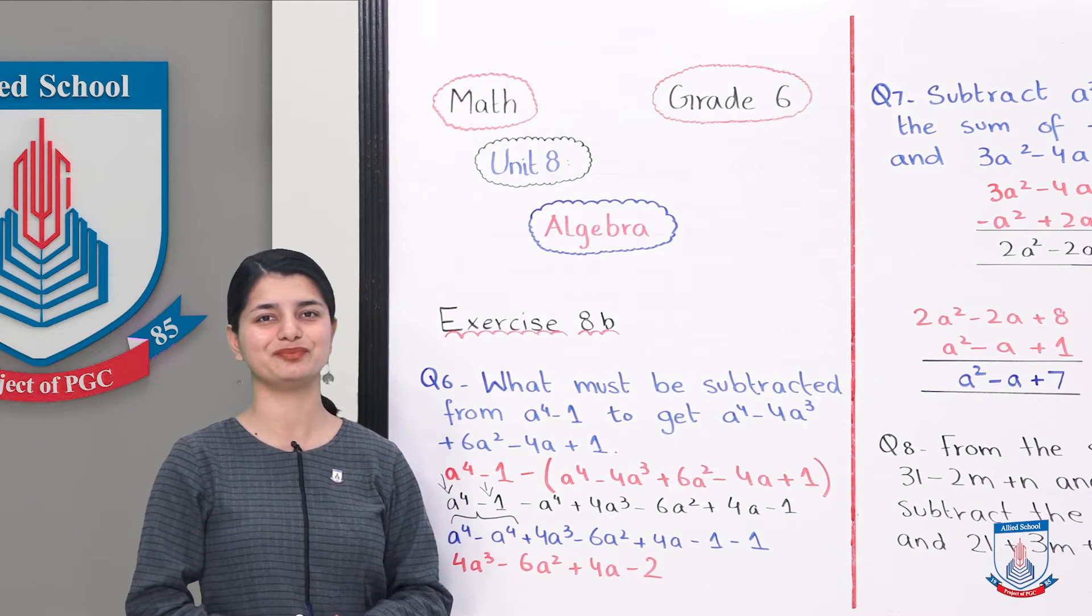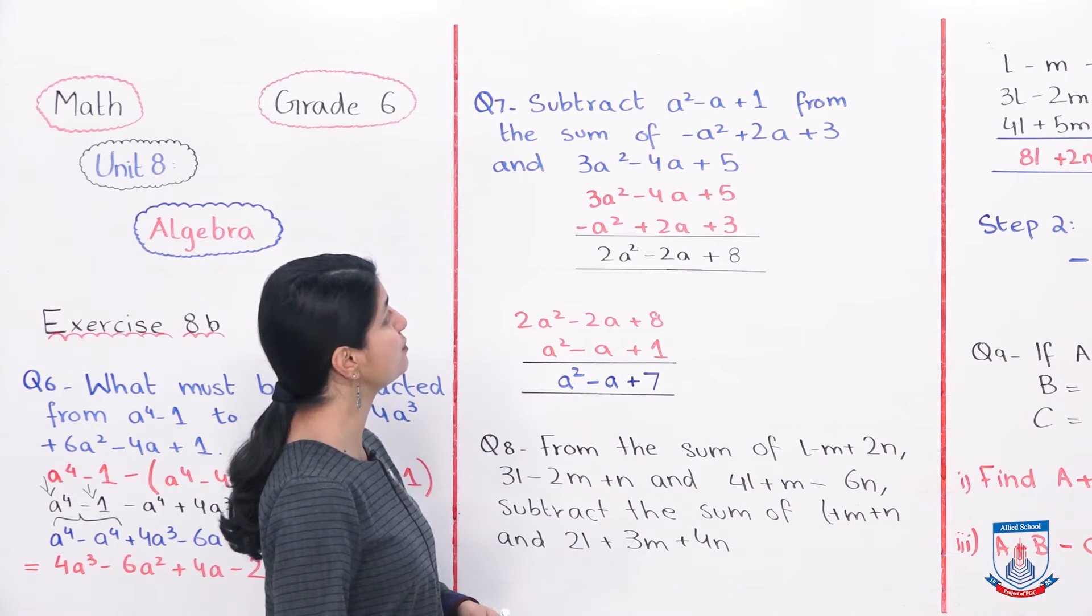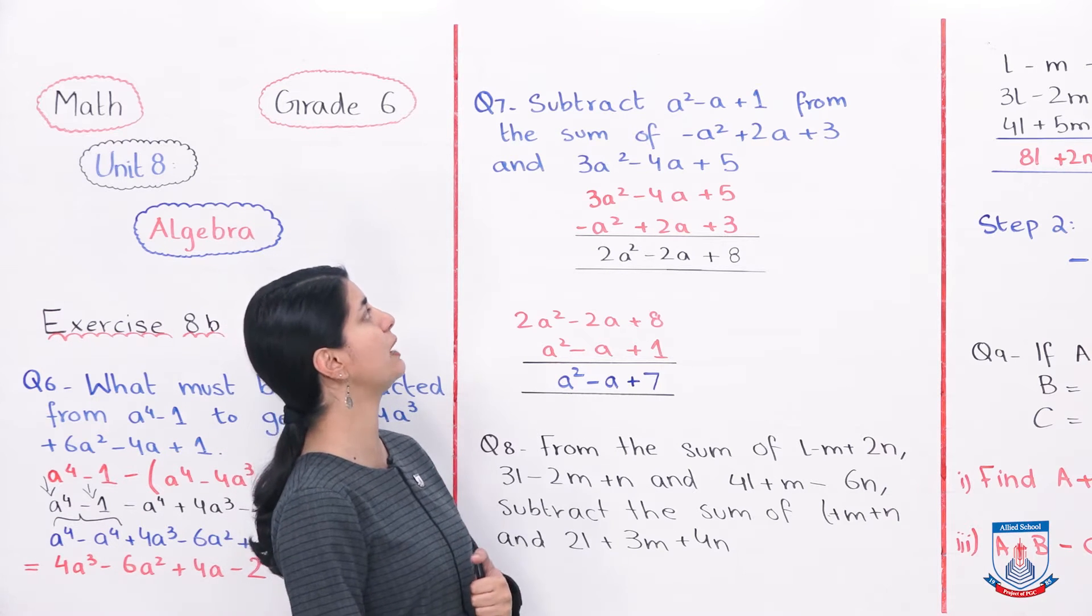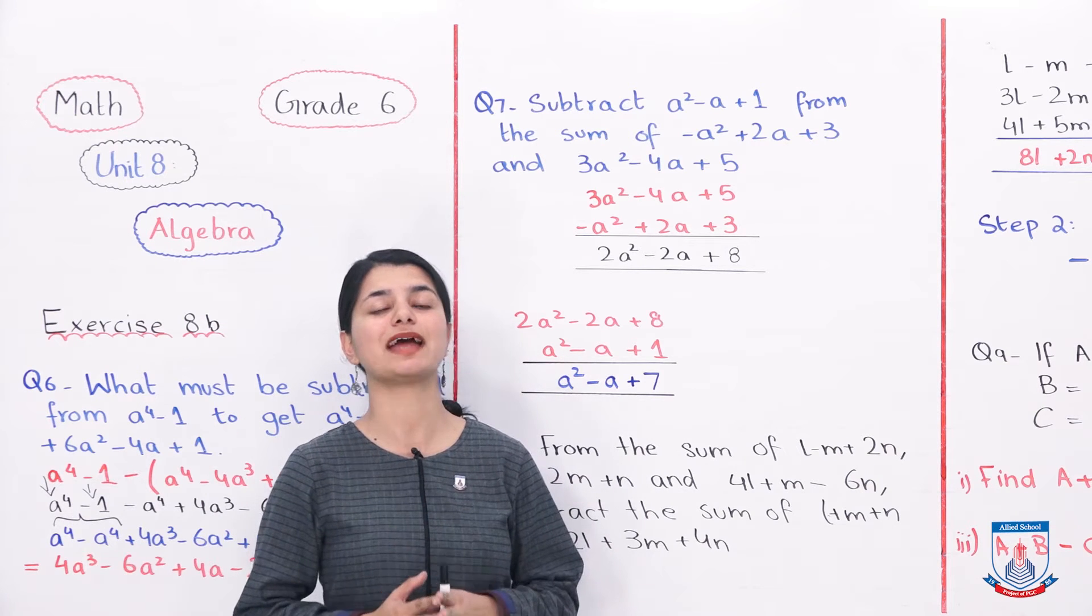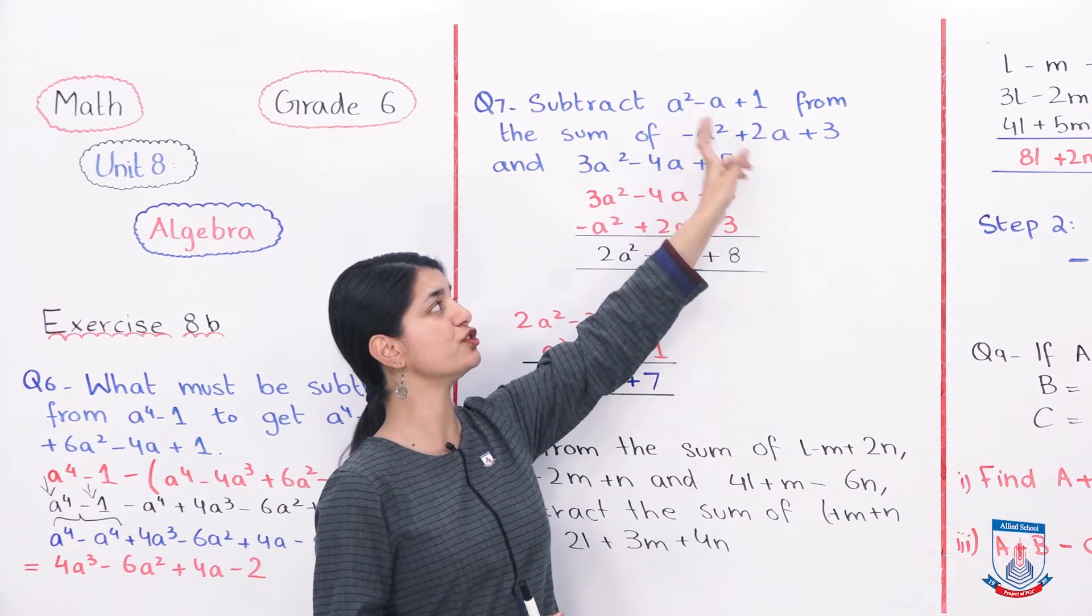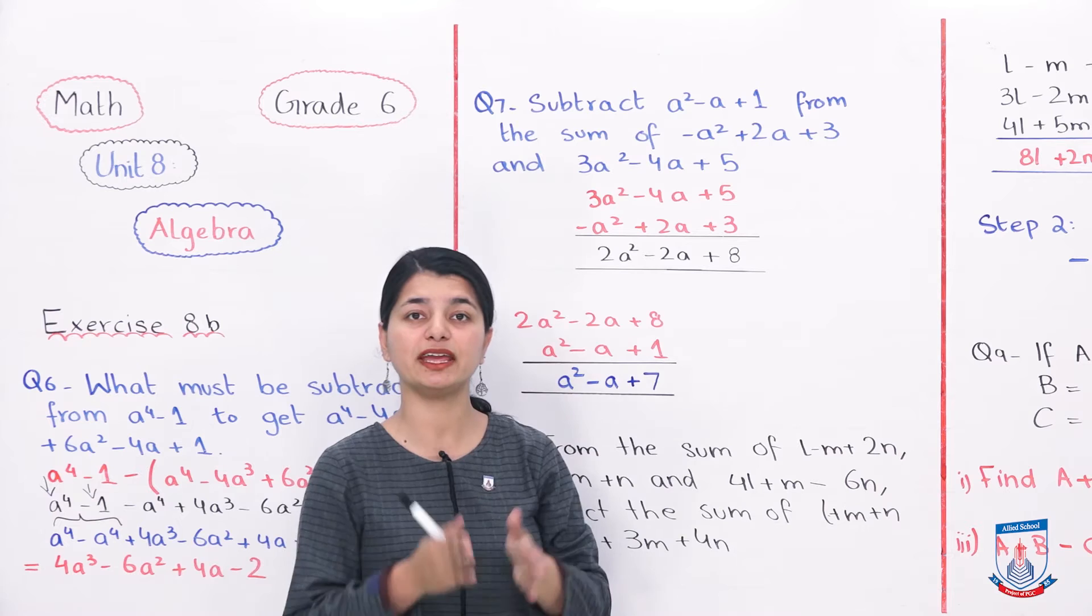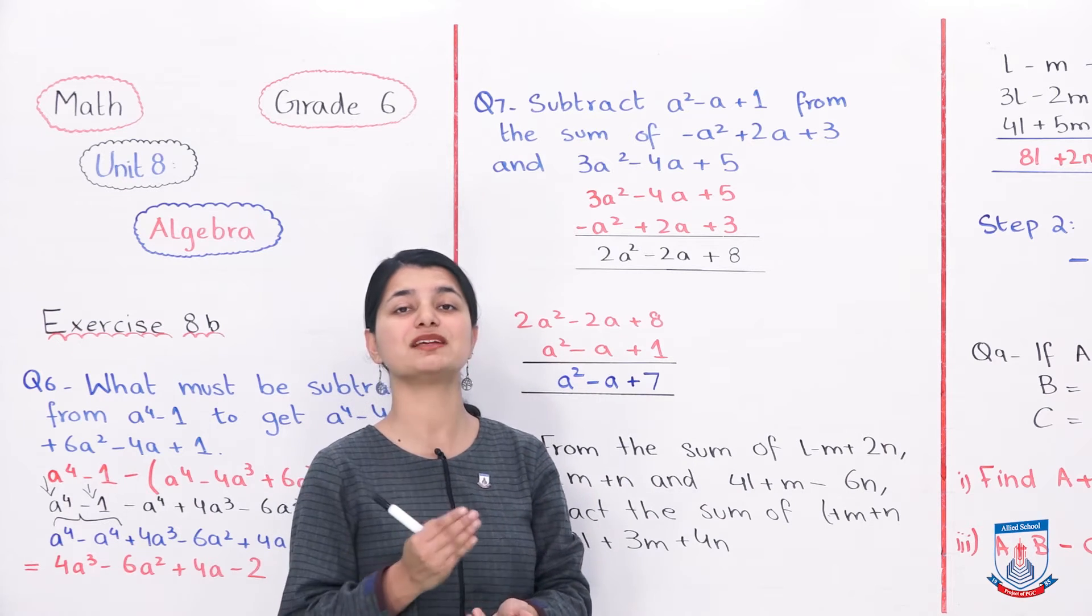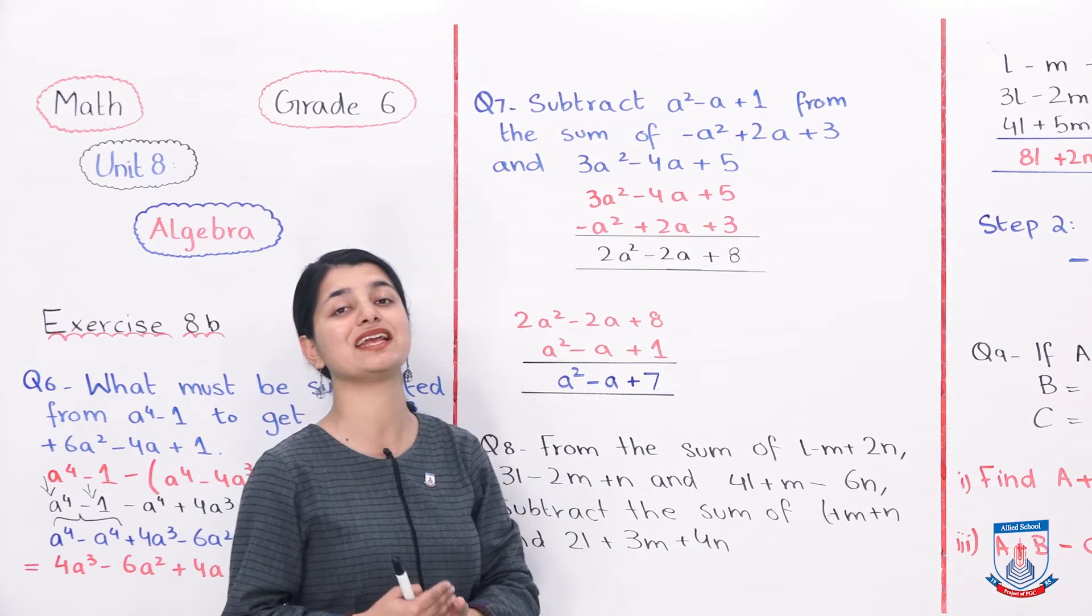Let's see question number 7. Question number 7 is: subtract A^2 minus A plus 1 from the sum of minus A^2 plus 2A plus 3 and 3A^2 minus 4A plus 5. First understand the statement, what they are asking. They are saying that you have to subtract this expression from the sum of these two expressions. They have given you two expressions. You have to add them. Their sum, from that sum you have to subtract the first expression. So first what will we do? We will add these two expressions. As we are told to do, we will take the sum for them.